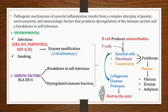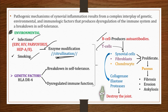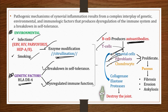The pathogenic mechanism of synovial inflammation results from a complex interplay of genetic, environmental, and immunologic factors causing dysregulation of the immune system and a breakdown in self-tolerance. Environmental factors include HIV, Epstein-Barr virus, parvovirus, hepatitis, and cigarette smoking, which cause citrullination, dysregulating B and T lymphocytes. B cells secrete autoantibodies; T cells stimulate synovial cells, fibroblasts, and chondrocytes. Genetic factors like HLA-DR4 also cause immune dysregulation, leading to proliferation and formation of pannus — granulation tissue causing fibrosis, bony ankylosis, and destruction of bone.